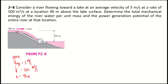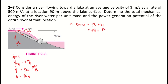The water flows with both kinetic energy and potential energy. To solve for the total mechanical energy per unit mass, the mechanical energy is equal to the potential energy plus the kinetic energy. That is equal to gravity times height plus velocity squared divided by 2.